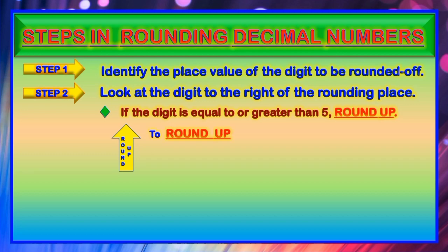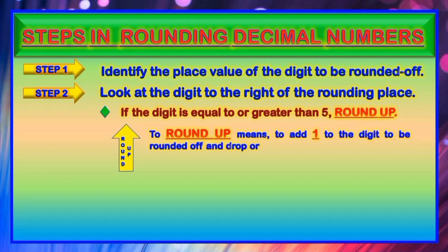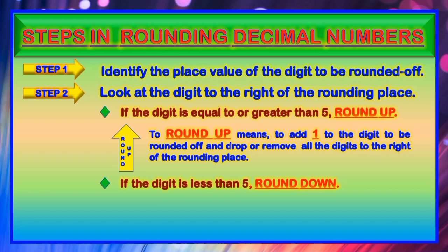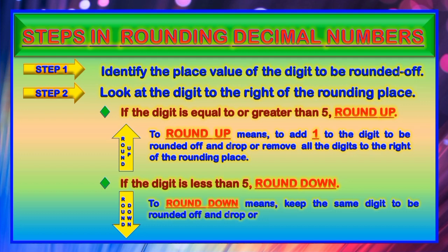To round up means to add 1 to the digit to be rounded off and drop or remove all the digits to the right of the rounding place. The second condition: if the digit is less than 5, we round down, which means to retain the digit to be rounded off and drop or remove all the digits to the right of the rounding place.